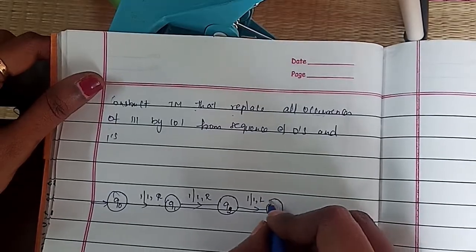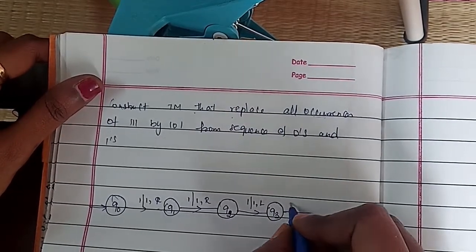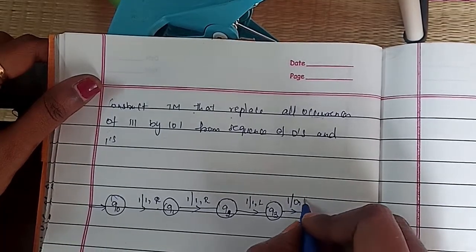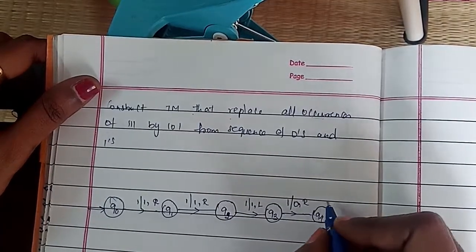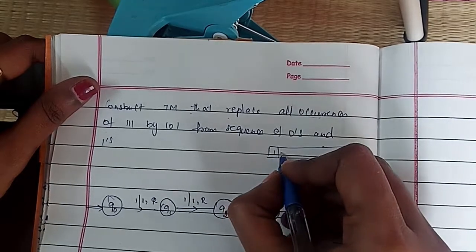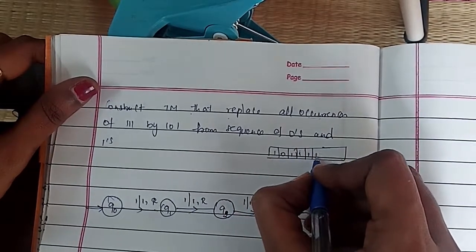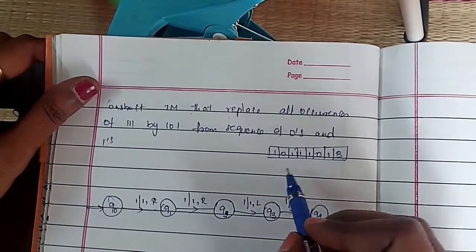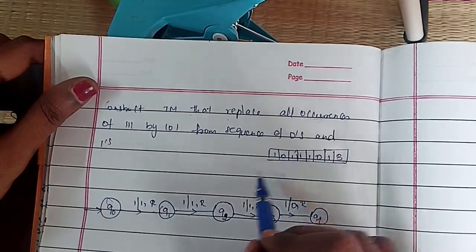At state Q3 you have to change that one to zero and go in the right direction, making the state Q4. After that if my string is, for example, one zero one one one zero one, for three continuous ones you apply this criteria.